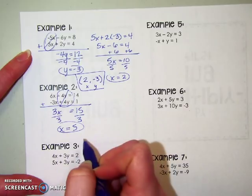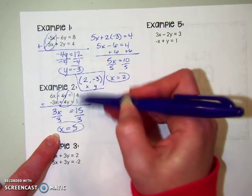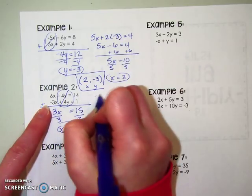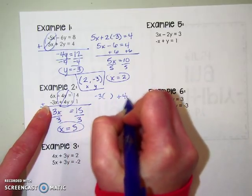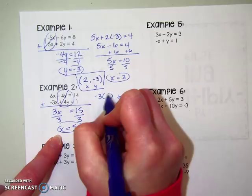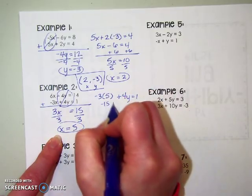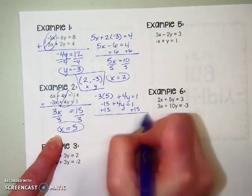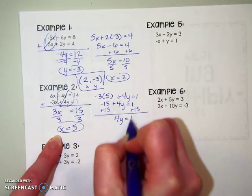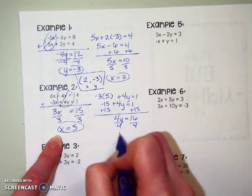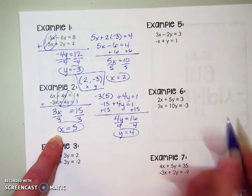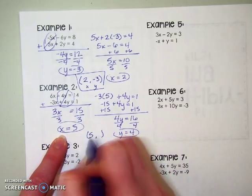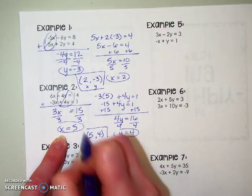So that's half the answer. Now I'll use one of the original equations — it doesn't matter which one, they'll both work — and plug X in. Using negative 3X plus 4Y equals 1 with X equals 5 gives negative 15 plus 4Y equals 1. Adding 15 to both sides gives 4Y equals 16; divide by 4, so Y equals 4. Put the two answers in an ordered pair in alphabetical order: (5, 4).